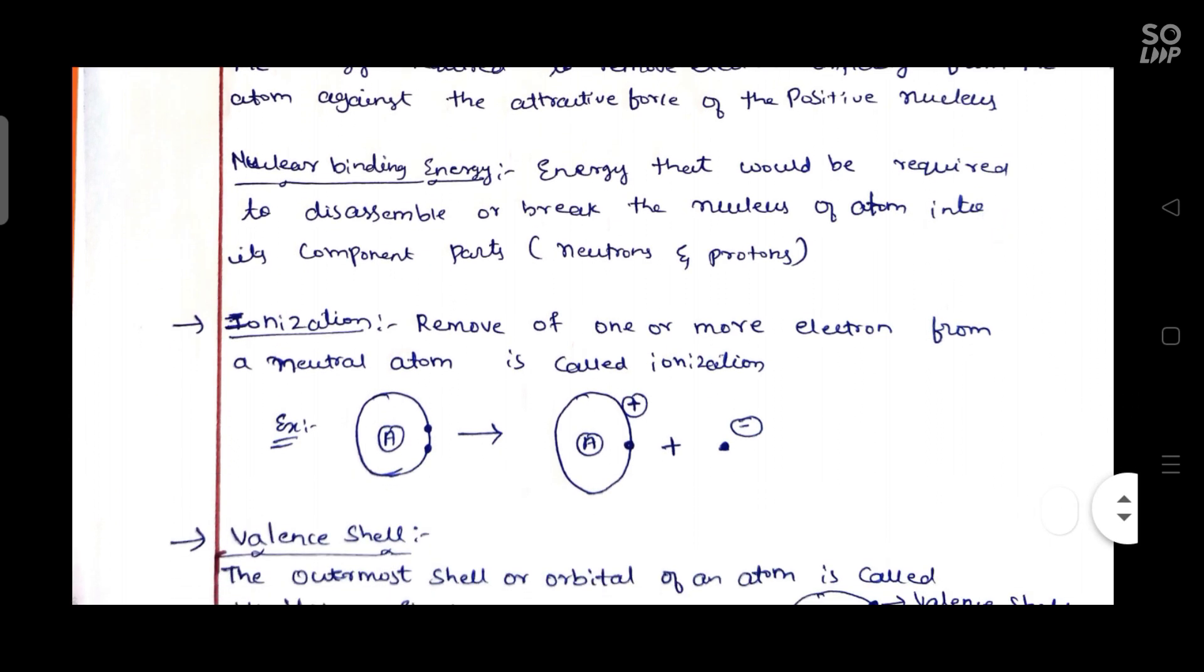Ionization: removal of one or more electrons from a neutral atom is called ionization. It's the removal of electrons from a neutral atom.